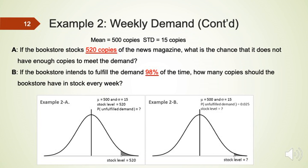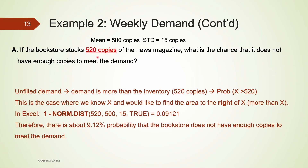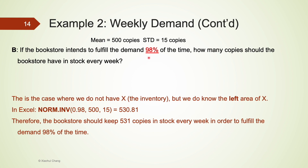Now let's change the numbers and use Excel. For part A with 520 copies instead, we want the probability that demand exceeds 520. We know x and want the area to the right, so we use NORM.DIST to get the area to the left, then subtract from 1. The result is 0.09121, meaning there is about a 9 percent probability the bookstore does not have enough if it only stocks 520 copies.